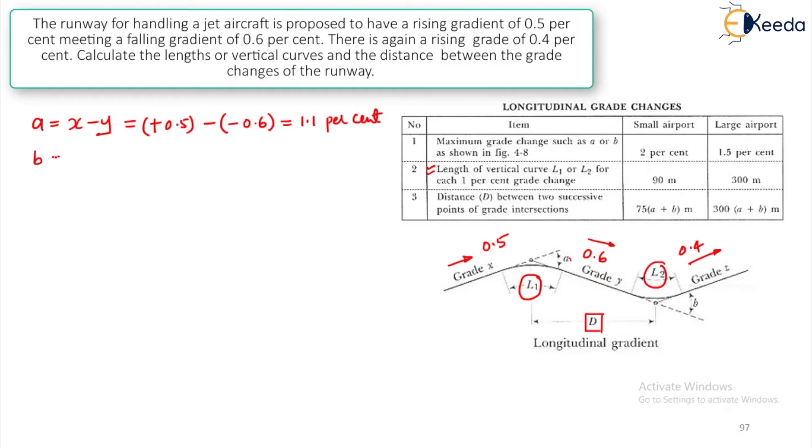This will come up to 1.1%. Similarly, calculate the value of B. B will be Y minus Z. Your Y will be minus 0.6 because it is falling gradient minus of then we have raising gradient, plus 0.4. This is also minus. This is also minus. We will get, we have to add 0.6, 0.4. This is 1.0%. Now, because this value is less than 1.5%, we need to consider it as a large airport because A is also less than 1.5%.